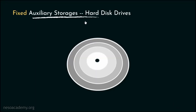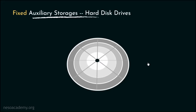During the session on secondary memory hard disk drives, we learned that every surface of the magnetic disks or platters are divided into tracks. The tracks are actually concentric circles and the radius of the innermost track is way smaller than the radius of the outermost track. The tracks are further subdivided into sectors, and the number of sectors in each track is the same across all tracks.